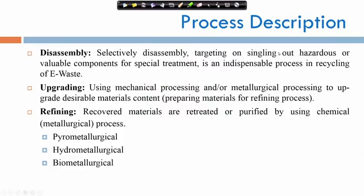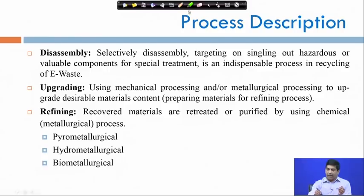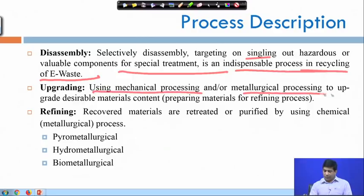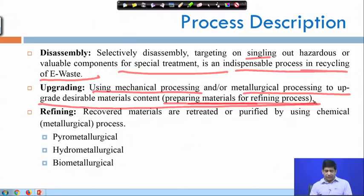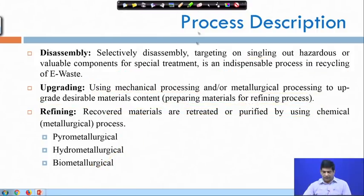Looking at the details of each step: disassembly means selectively taking out hazardous material and singling out available components for special treatment — it is an indispensable process in e-waste recycling. Upgrading uses mechanical or metallurgical processing to concentrate the desirable material content, preparing it for refinery purposes. Refining means recovering or purifying material using chemical processes like pyrometallurgical, hydrometallurgical, or biometallurgical processes.